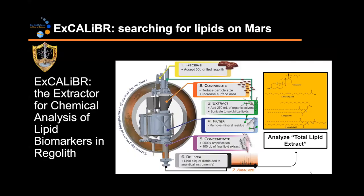To search for lipids on Mars, I'm working with a team at NASA Ames that's designing Excalibur, which stands for the Extractor for Chemical Analysis of Lipid Biomarkers and Regoliths — an instrument that will one day hopefully fly to Mars. It works by accepting a soil sample that's drilled or scooped. It'll then crush up the sample, extract the lipids with organic solvents, filter out minerals, concentrate those lipids down 2,500 times to improve our signals, and then deliver those lipids to an analytical instrument so we can diagnose the structures and characterize them to see whether or not they're likely to have come from life or not.